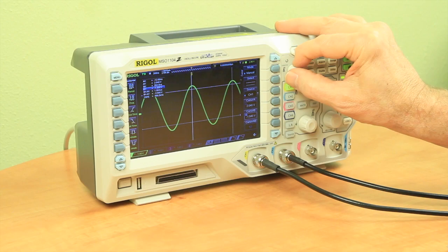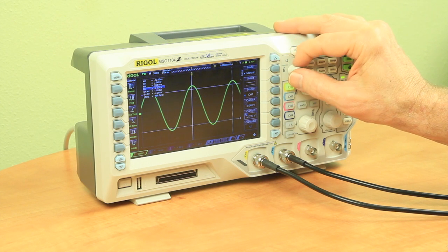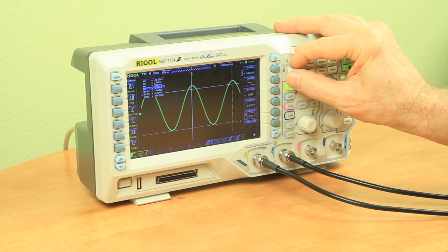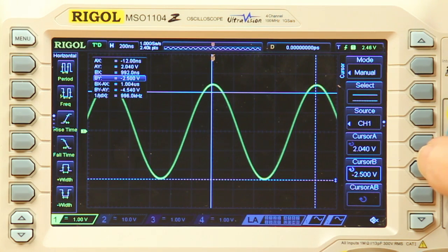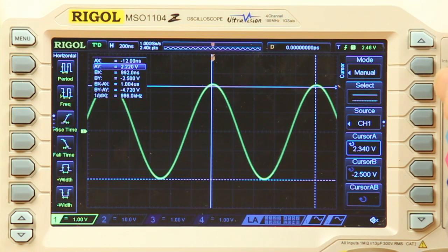We can get that adjusted down to the bottom peak of the signal for cursor B. And cursor A, we'll take that to the top peak. So, now you see we have about a 5 volt peak to peak signal.